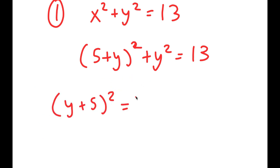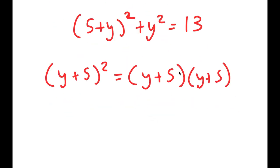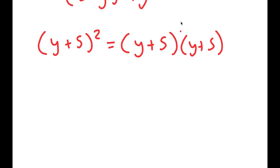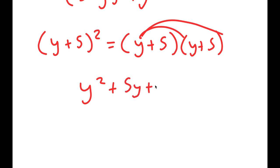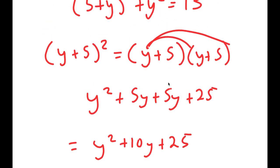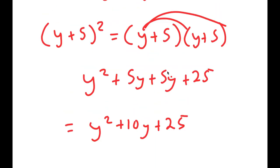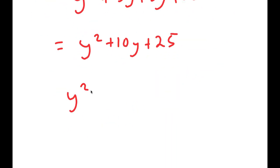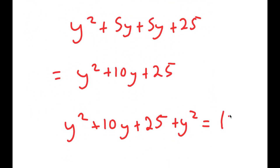So (y plus 5) squared equals (y plus 5) times (y plus 5). Distributing, I get y squared plus 5y plus 5y plus 25, which is y squared plus 10y plus 25. Adding the remaining y squared gives y squared plus 10y plus 25 plus y squared equal to 13.